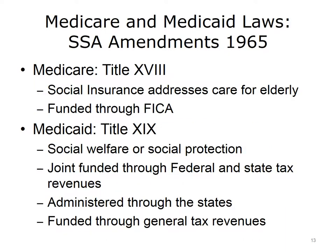Two amendments to the Social Security Act became law in 1965: Title 18, a social insurance plan known as Medicare, and Title 19, a social welfare plan known as Medicaid. Medicare is a federal insurance plan that reimburses providers and organizations directly for health care services. The main criteria for Medicare eligibility is that an individual be over the age of 65 or disabled. It is funded through the Federal Insurance Contributions Act, or FICA, a payroll tax on an employee's earnings matched by the employer. Medicaid is a combined federal-state program that provides insurance for the poor using state and federal tax revenues, with administration at the state level. The main criteria for Medicaid eligibility is limited income and financial resources, or disability.